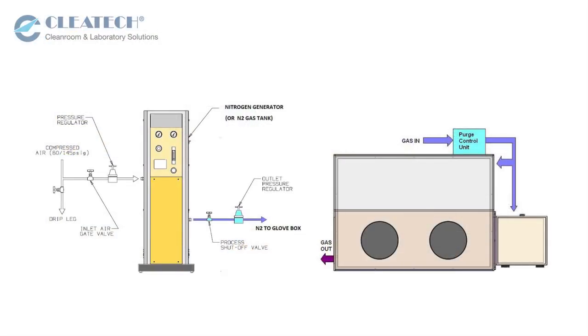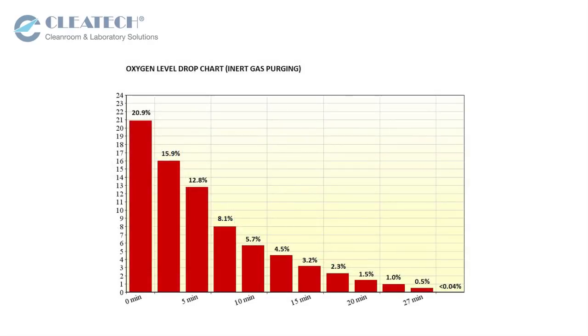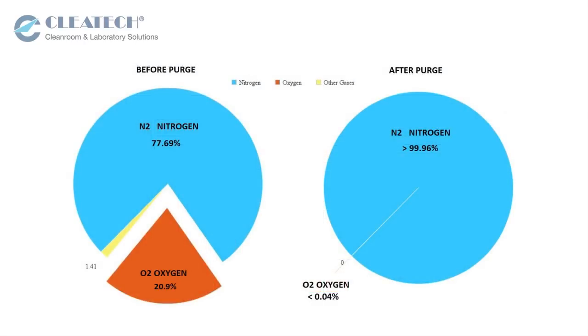Inert atmosphere glove boxes are an economical option for applications that require oxygen level and relative humidity to be as low as 400 ppm or 0.05%. Dry nitrogen or argon can be used within the enclosure to reduce the oxygen concentration and minimize oxidation of samples.